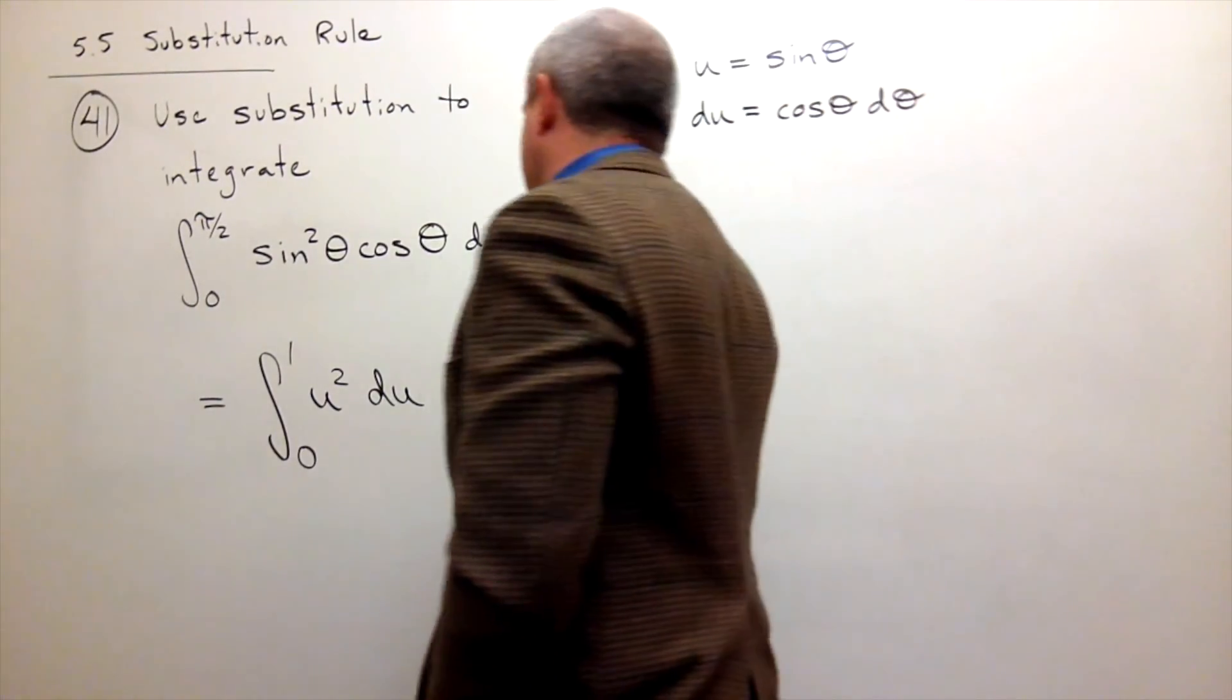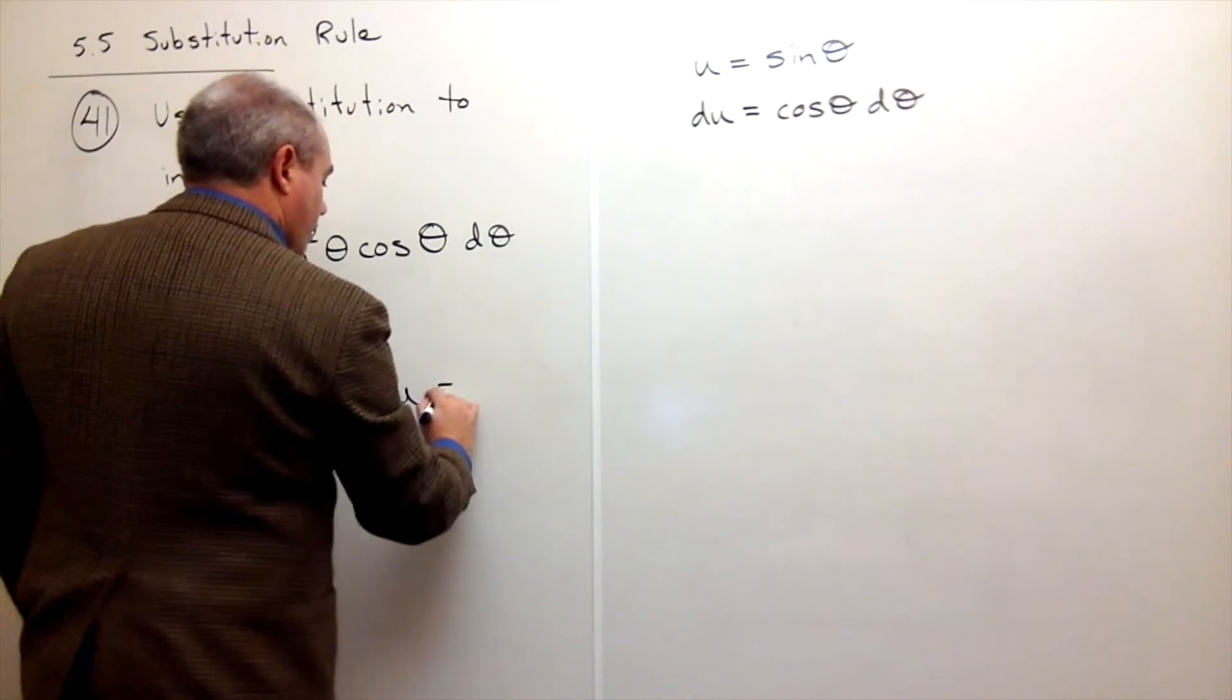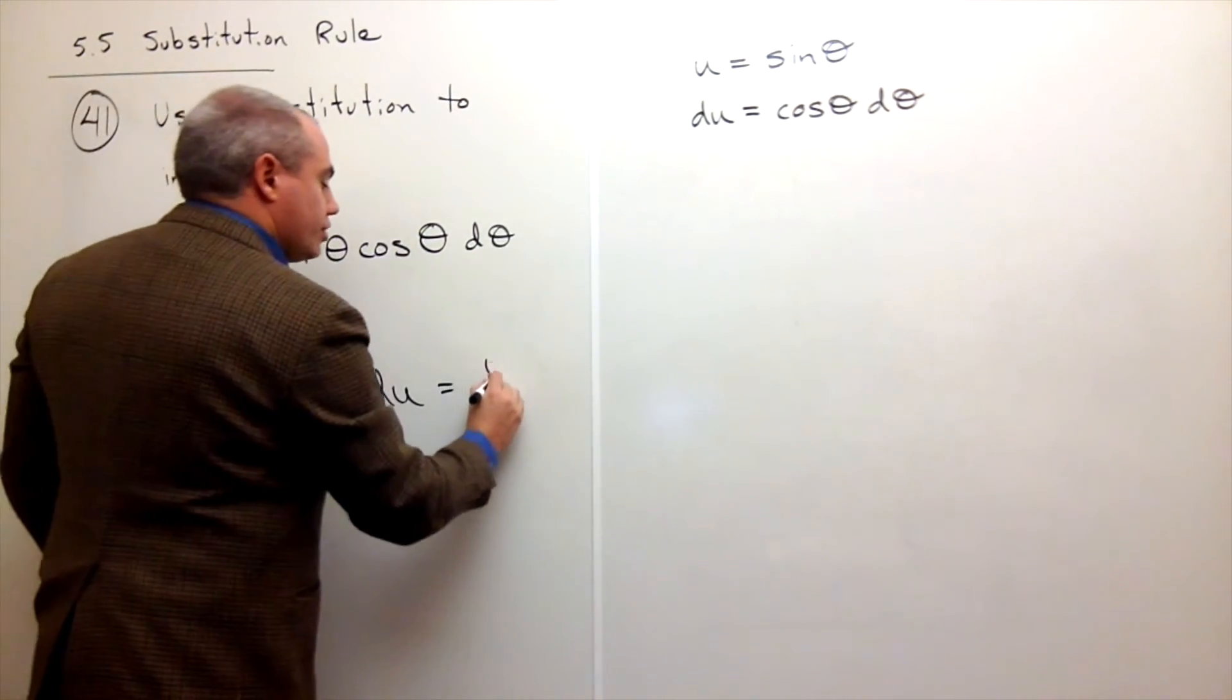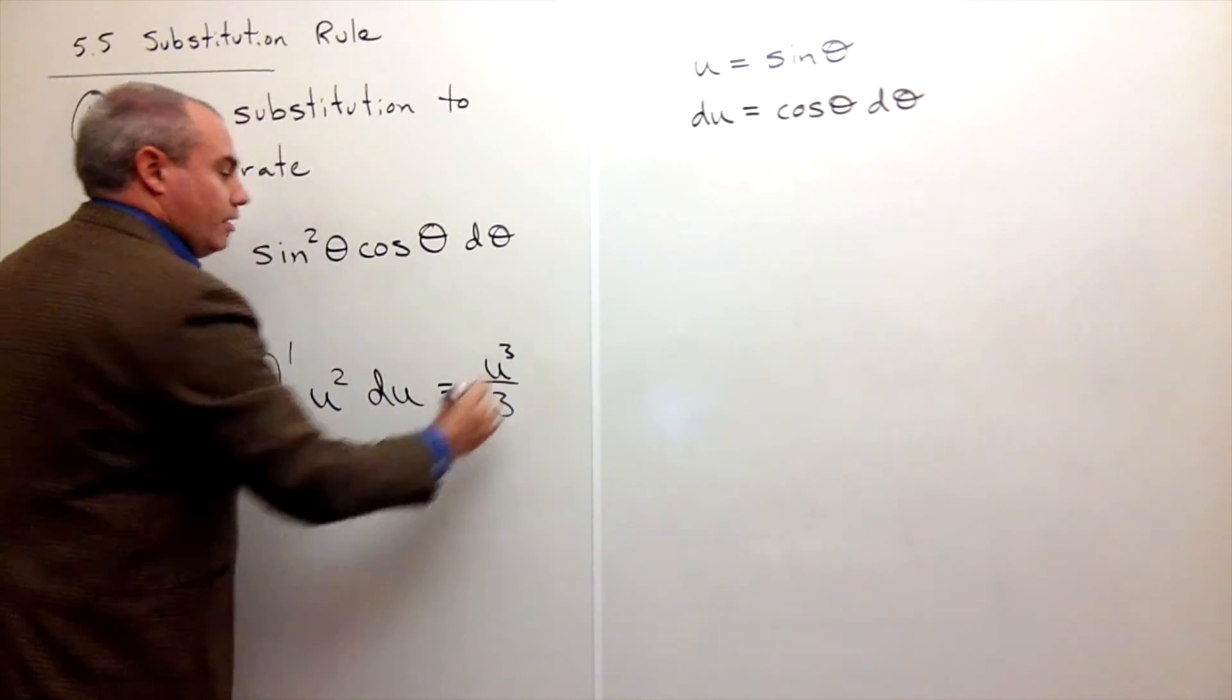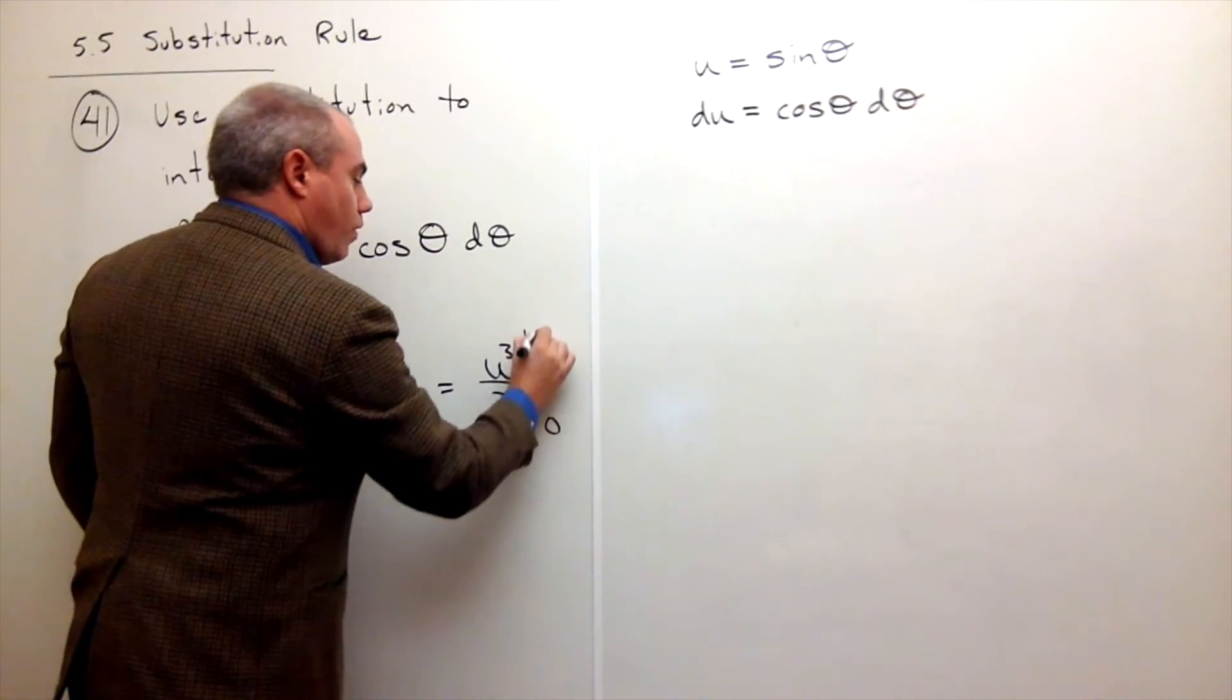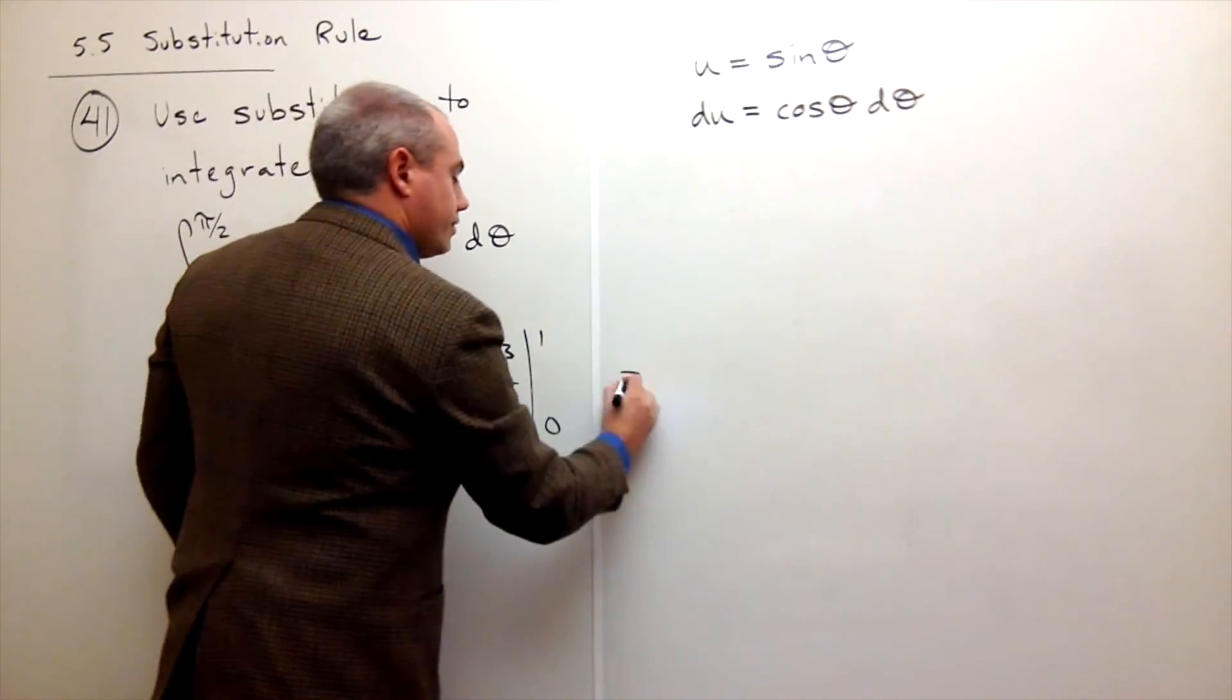So let's take an antiderivative here. The antiderivative of u squared is u cubed divided by three. But we want to evaluate that from zero to one. So let's do that.